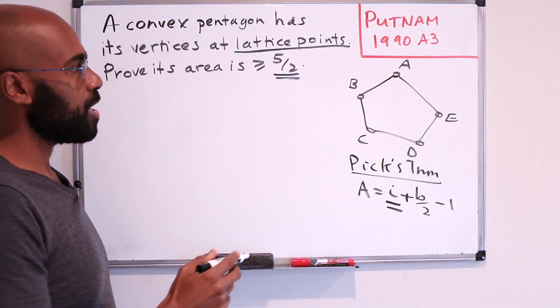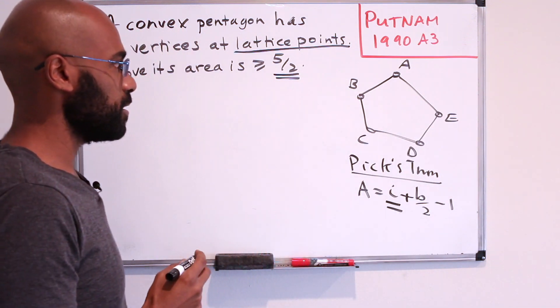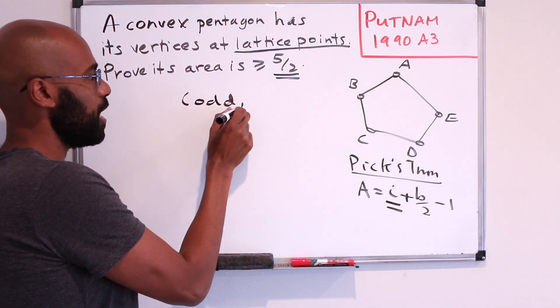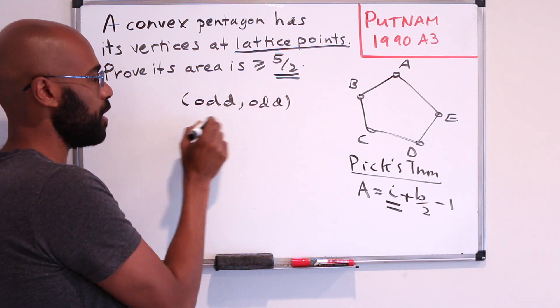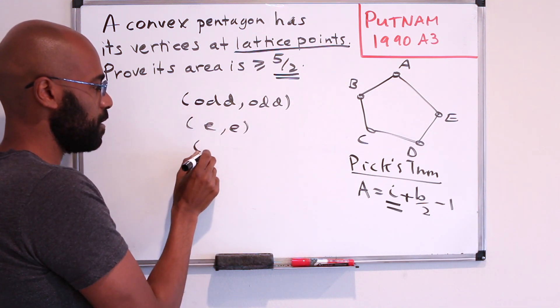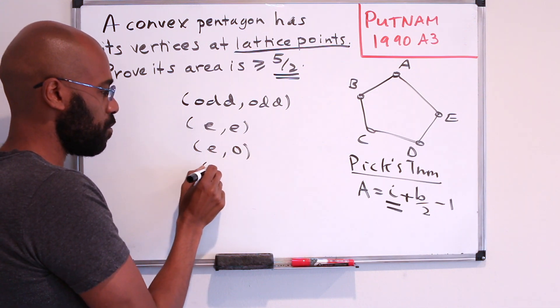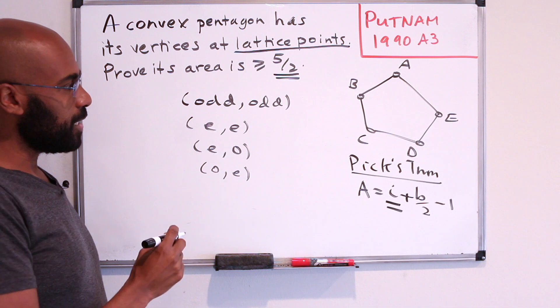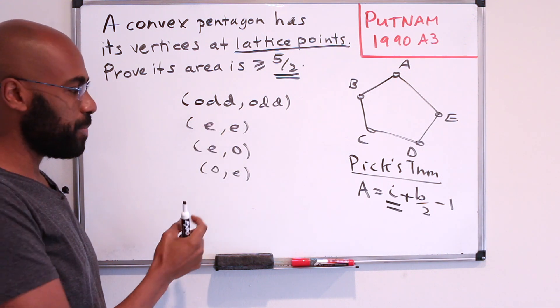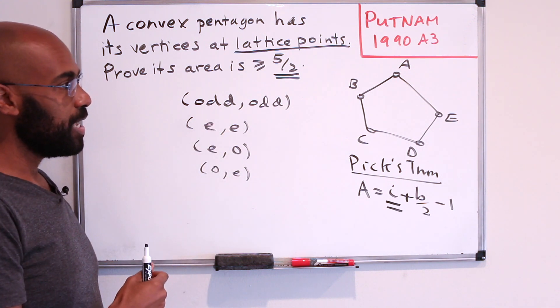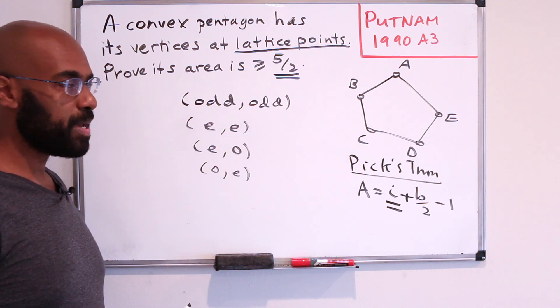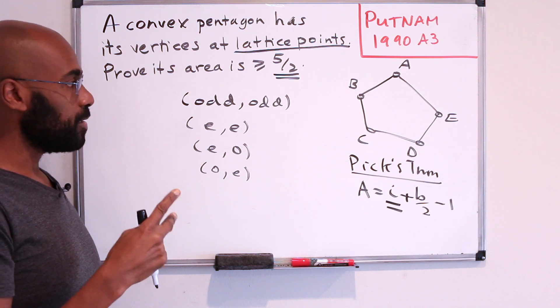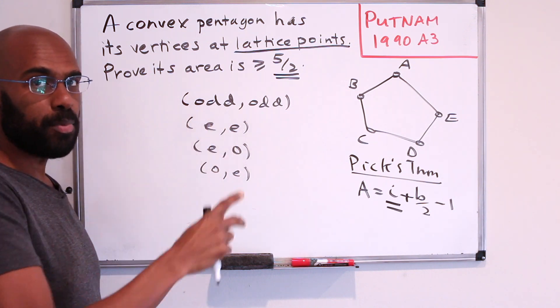So we'll start by thinking about these points and their coordinates. So if you look at the parity of the coordinates, we have four options. Either both coordinates are odd, or we have an even and even, or even odd, or odd even. So as a consequence, because there's four possibilities for the parity of both coordinates, and we have five vertices in the pentagon, there has to be at least two of them that have the same parity in both coordinates.